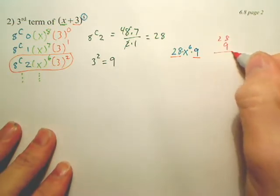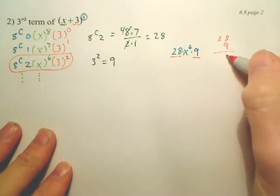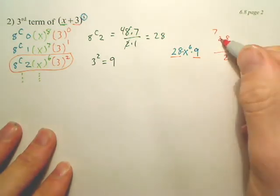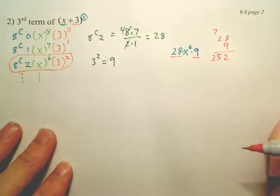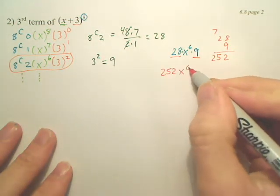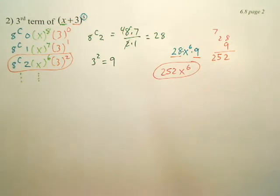We still have to multiply 28 and 9. So 9 times 28. 9 times 8 is 72. That is 18 plus 7 is 25. So we have 252x to the 6th. That is the 6th term.